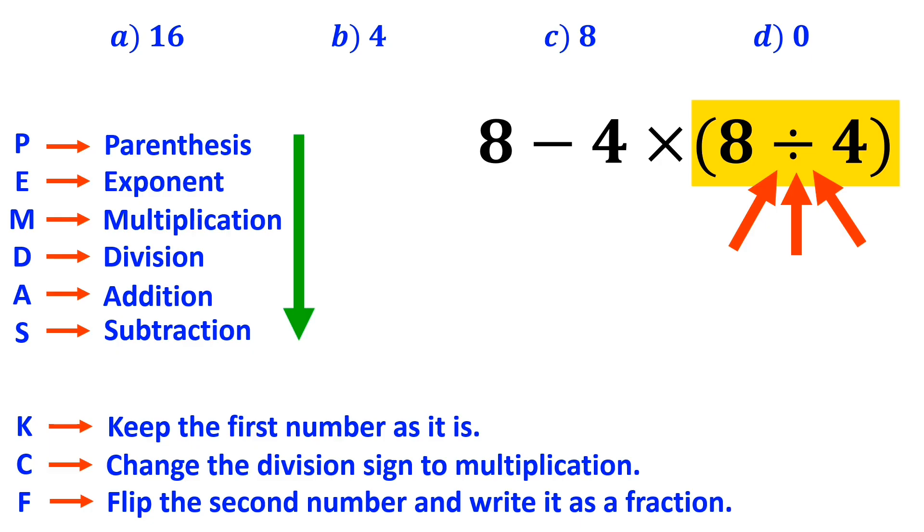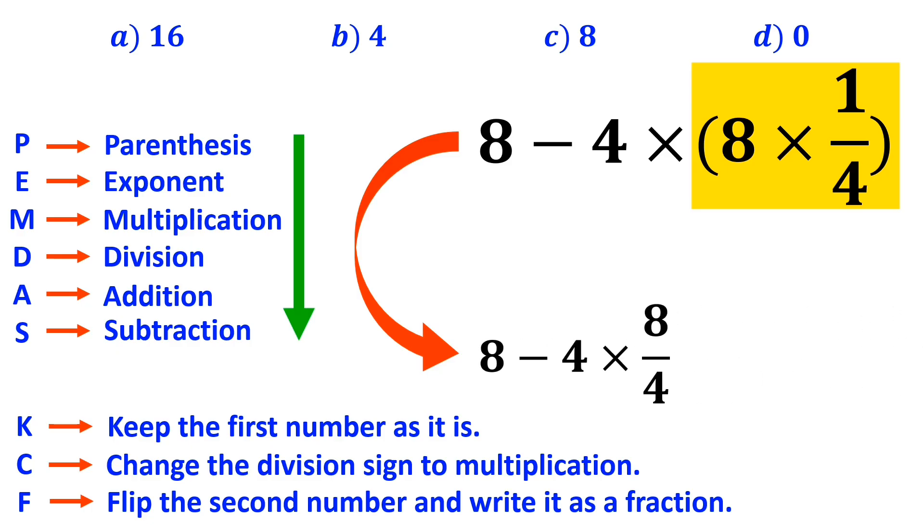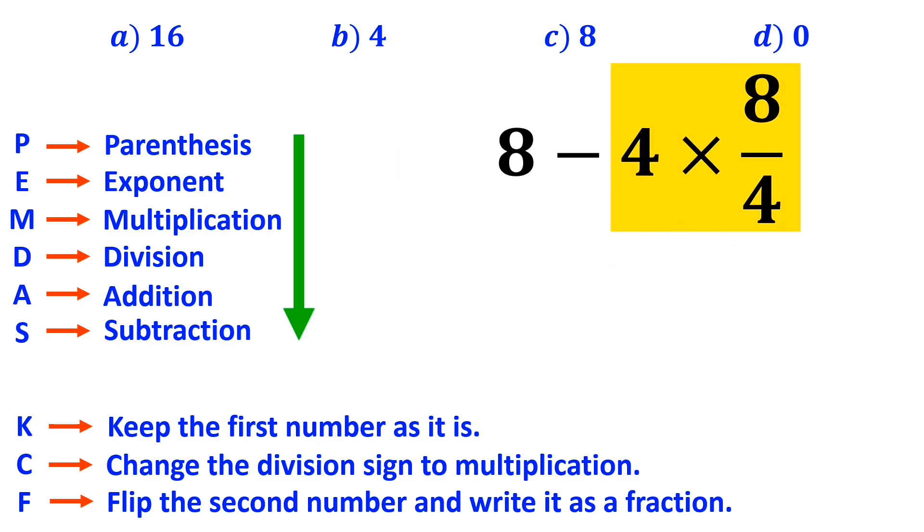Okay, now we remove the part that I've highlighted in yellow and replace it with 8 times 1 over 4. So the entire expression becomes 8 minus 4 times 8 over 4. In the next step, the two 4's cancel each other out, and this expression simplifies to 8 minus 8, which finally gives us the answer 0.